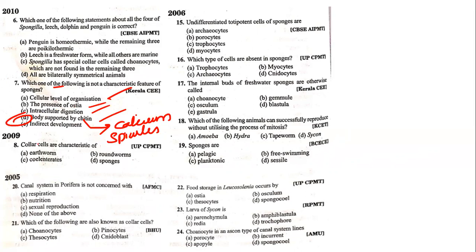Collar cells are the characteristic of sponges, because collar cells are not present in earthworms, cnidarians, or roundworms — they are present only in sponges.